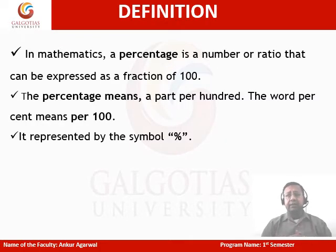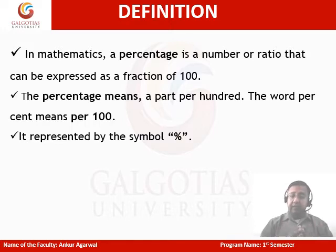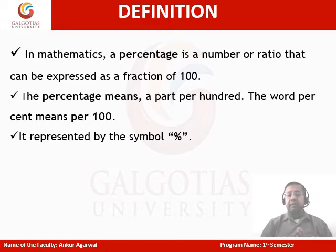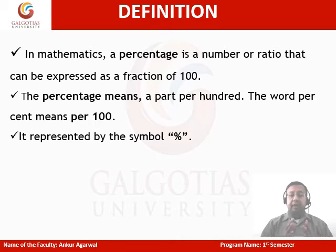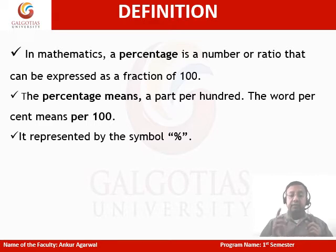Now, what is the definition? Earlier we understood the definition in terms of a philosophical approach given by Bill Murray. Now, if I define percentage in terms of mathematics — a percentage is a number or ratio that can be expressed as a fraction of 100. Percentages means a part per 100. The word percent means per 100, and this is represented by the percentage symbol.